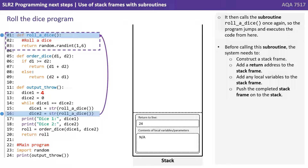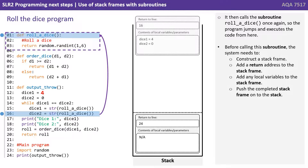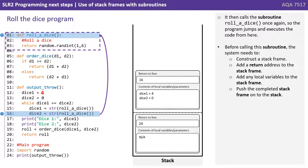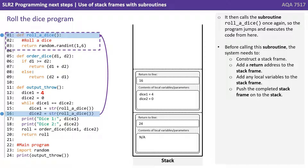The program then calls the subroutine Roll a Dice once again. The program jumps and executes the code from there. But again, before calling the subroutine, it creates a new stack frame and pushes it onto the stack.